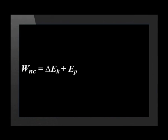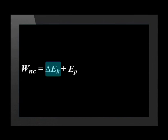The formula to calculate the work done by a non-conservative force is: work done by a non-conservative force equals the change in kinetic energy plus the change in potential energy.